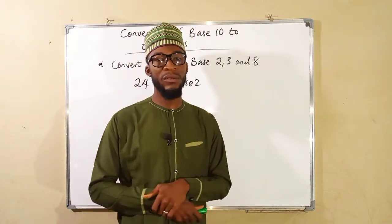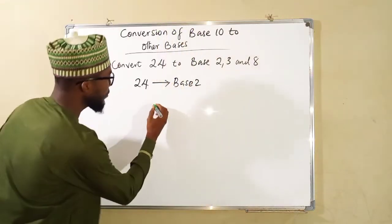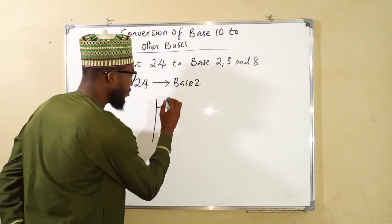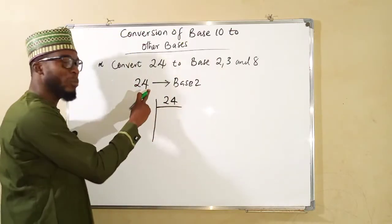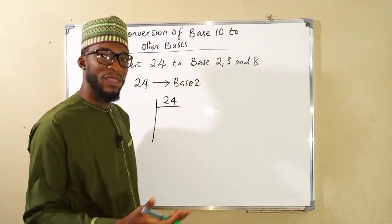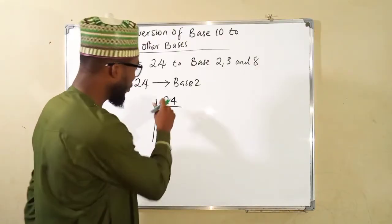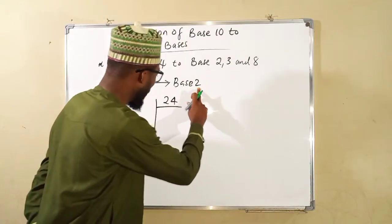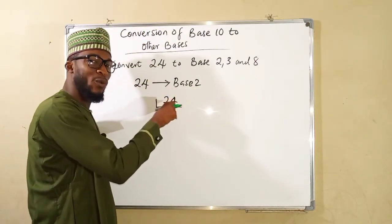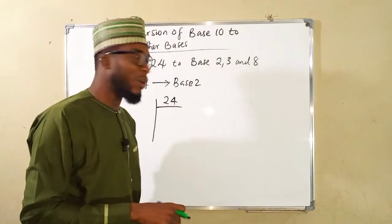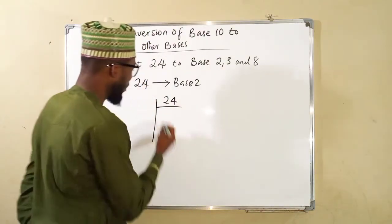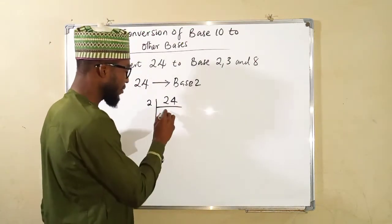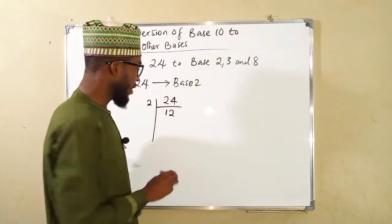Let us divide 24. Remember, 24 has no base, so any number without an assigned base is base 10. We want to convert it to base 2, so we are going to divide 24 continuously until we reach a number that 2 cannot divide. We have 2 here — 2 can go into 24 twelve times without remainder.